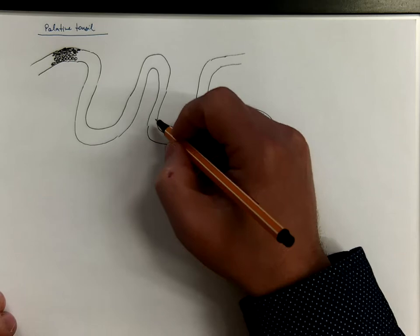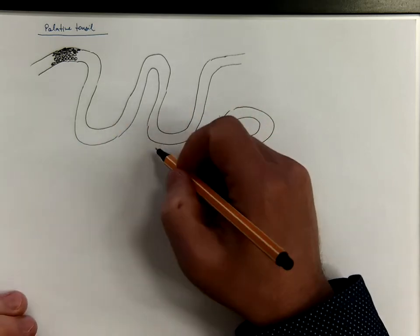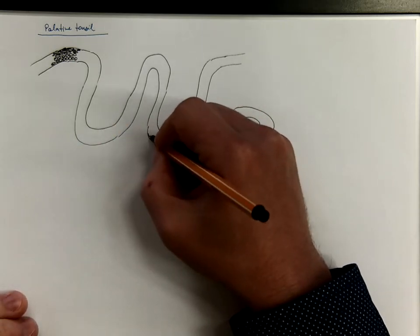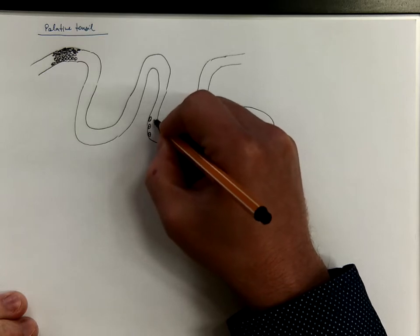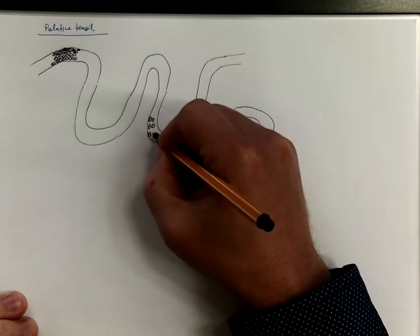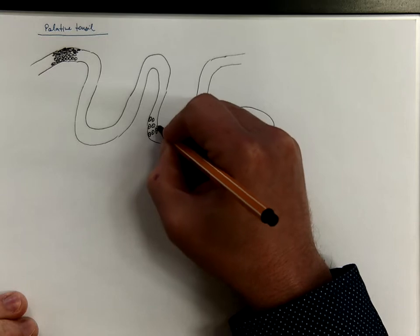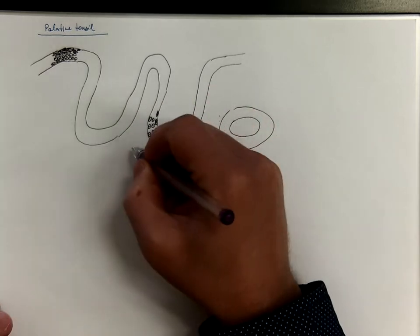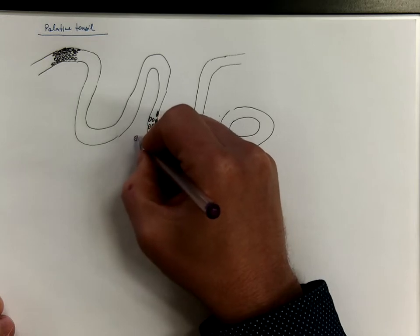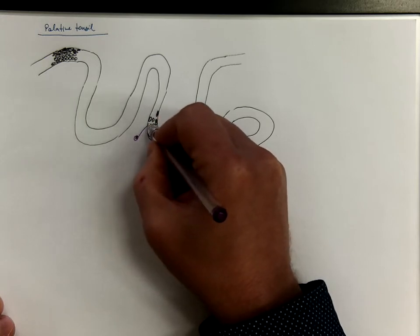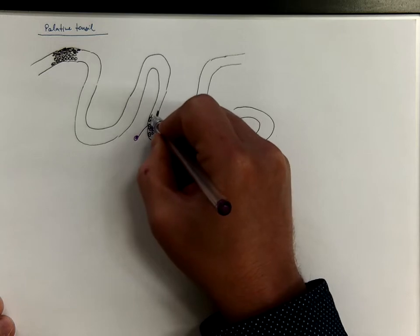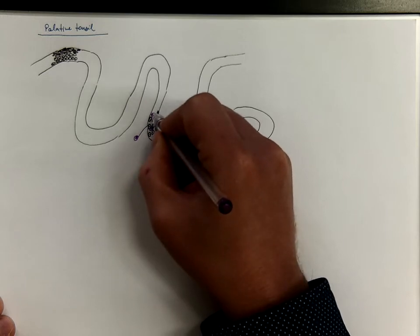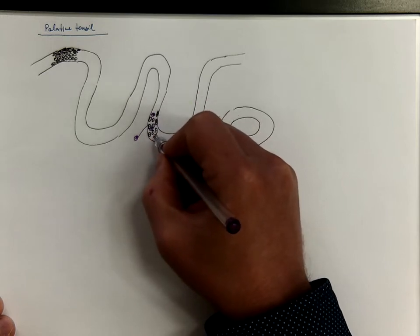However, in some regions, especially in the crypts, there are gaps between the epithelial cells, because the immune cells, the lymphocytes, are penetrating from the lamina propria into the epithelium. So you can actually find the lymphocytes inside the epithelium.